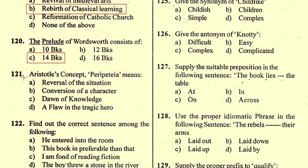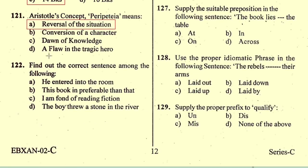Question number 121: Aristotle's concept of 'peripeteia' means — option A, reversal of the situation, is the correct option. Question number 122: Find out the correct sentence among the following — the correct sentence is 'I am fond of reading fiction', so option C is correct.